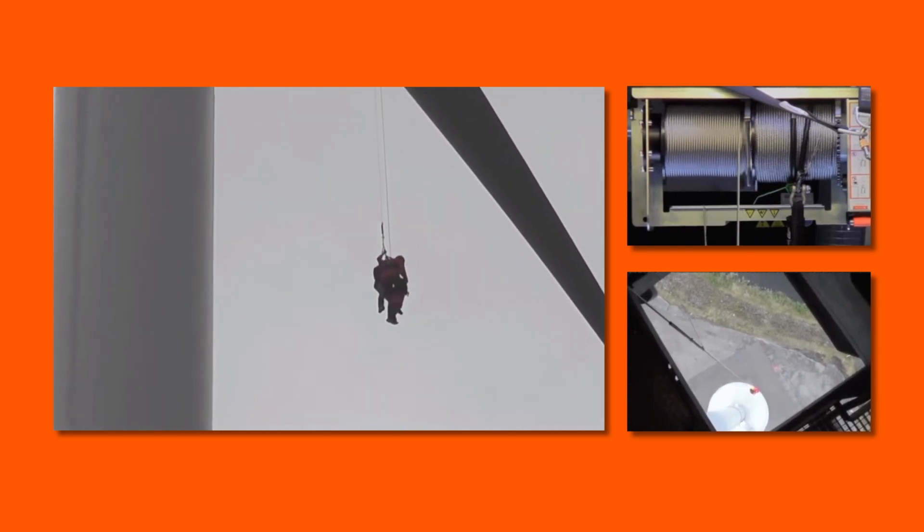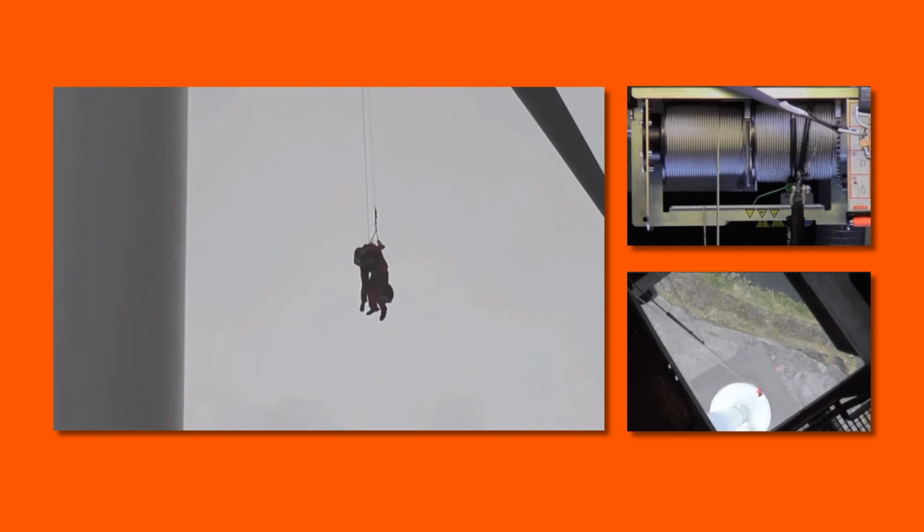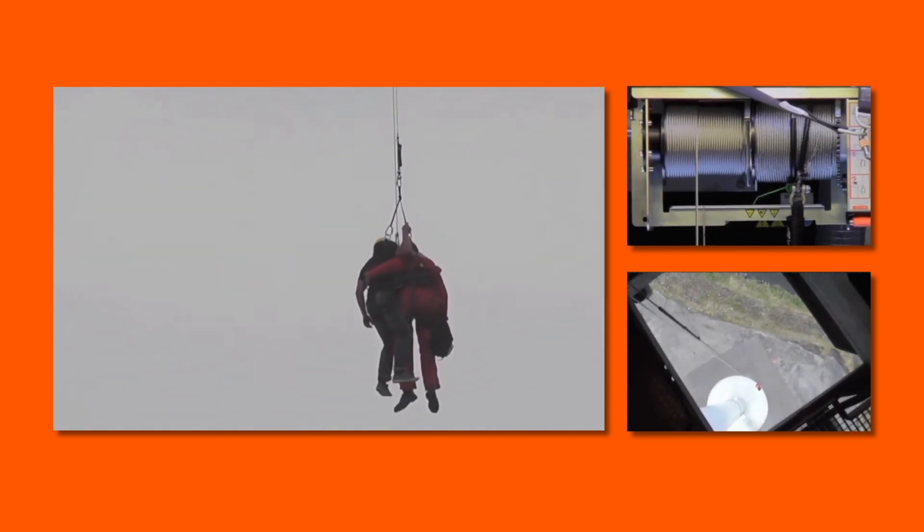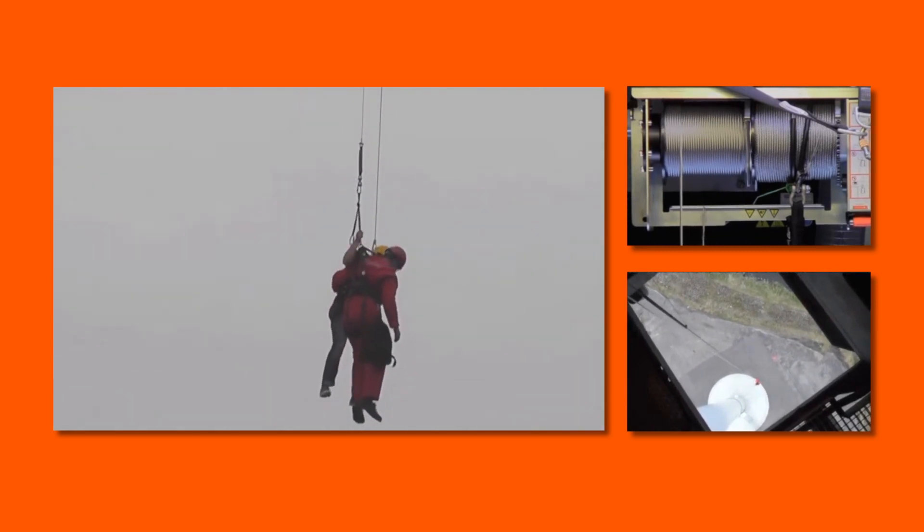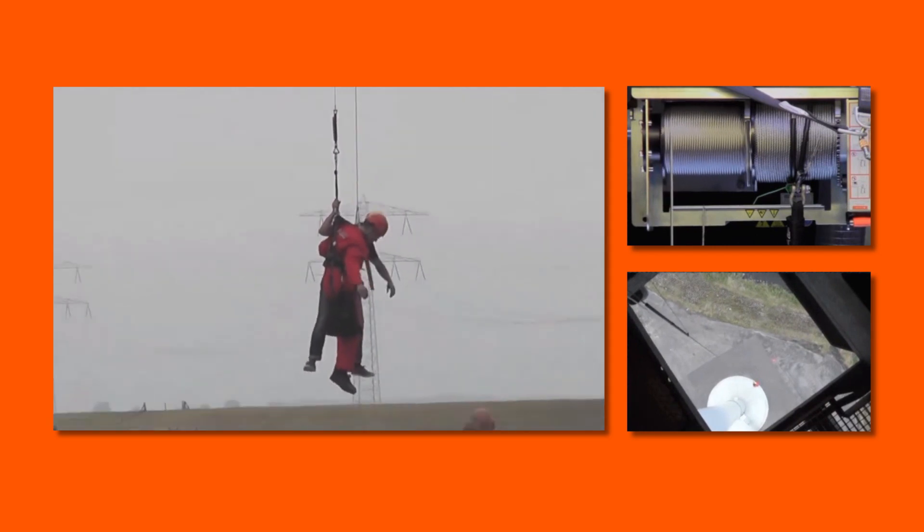Current escape devices used for evacuation are rope-based. The main issue with rope is that it doesn't withstand the extreme temperatures that can occur in a nacelle fire. The Evacuator is the first fireproof descent device approved and brought to market, providing the perfect solution for escape from high-rise structures.